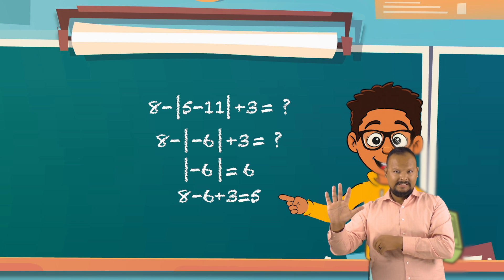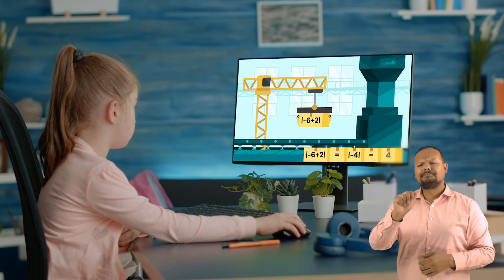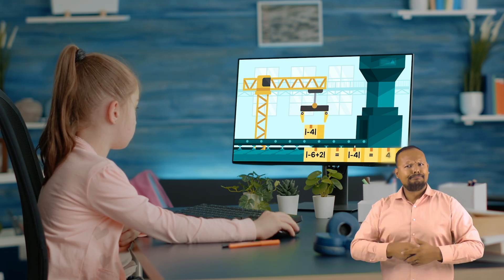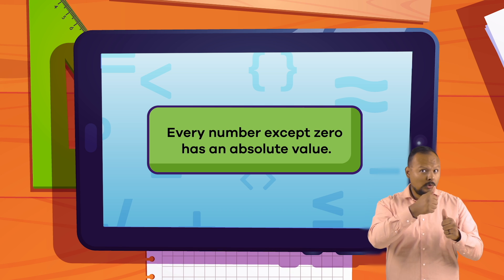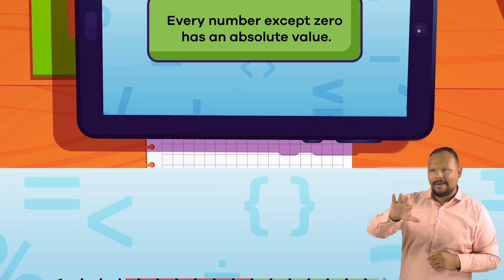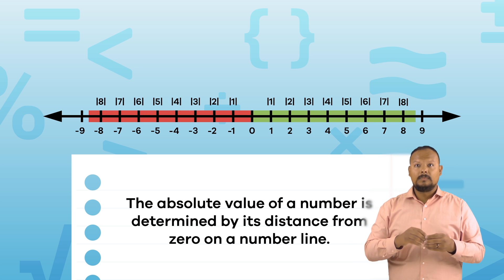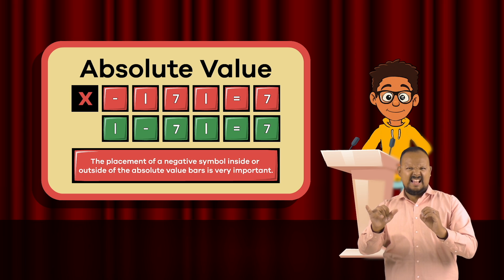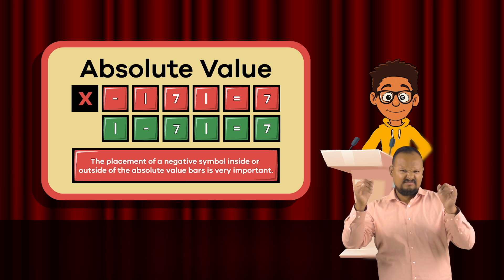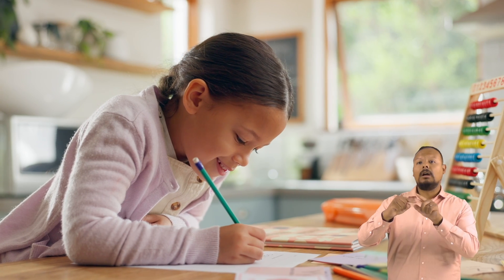Nice work, everyone! Absolute value is pretty cool, because you can use it to figure out useful things like distance and weather. Remember that every number besides 0 has an absolute value, you determine it by measuring a number's distance from 0, and that the position of a negative symbol is super important. Now, go have fun and create some amazing equations!